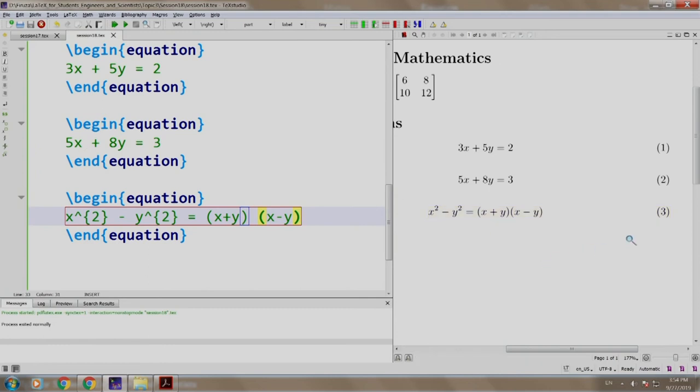Well, this is an article document class. As an exercise, just change the document class to a book and add a chapter. Observe the numbering of the equation in that case. Let us switch back to our slides.